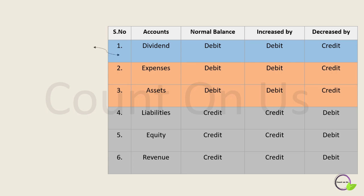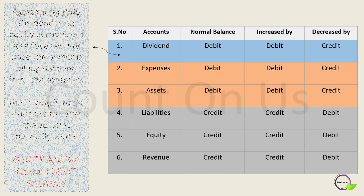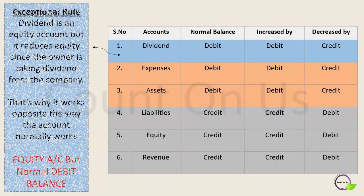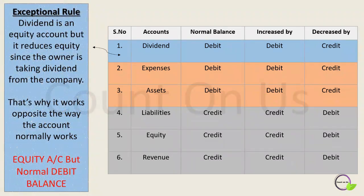Now I'll explain why dividends has a debit balance even though it is part of equity. There is an exceptional rule for dividends: dividends is an equity account, but it reduces equity since the owner is taking dividends from the company. That's why it works the opposite way from how an equity account normally works.